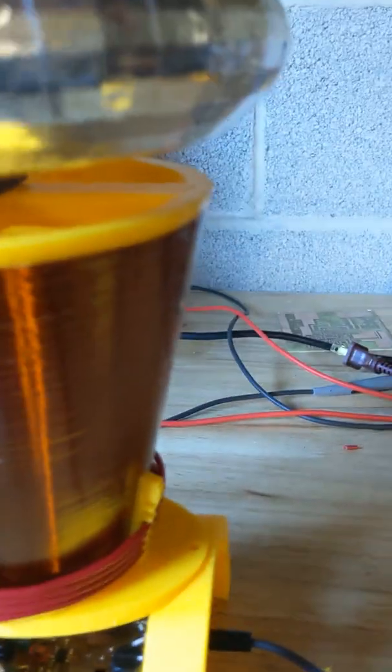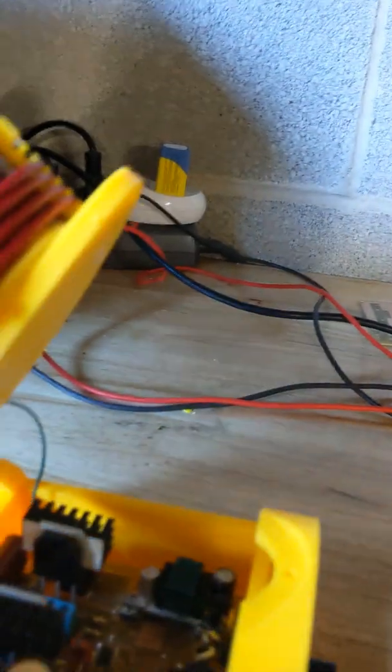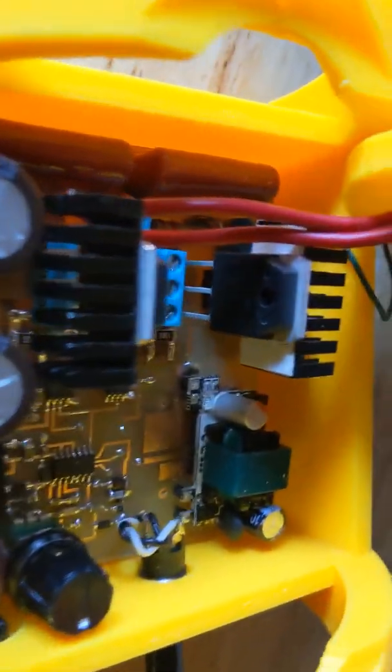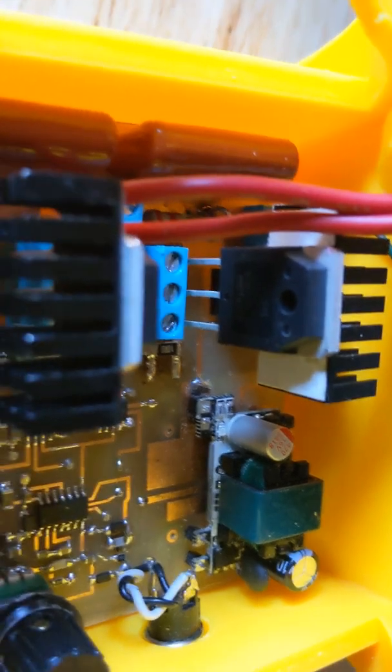So let's take this here and flip this over. Normally it's screwed in here but so you could look at the board. This is like a little three and a half by three and a half inch board and I've got two power MOSFETs.